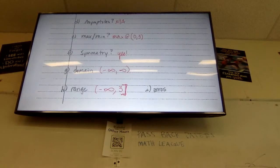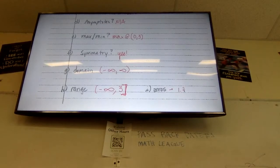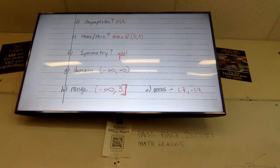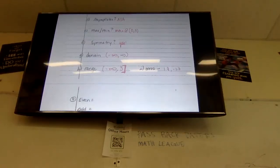For our zeros we can jump to the calculator. The zeros are positive 1.7 and negative 1.7. I feel like finding zeros on the calculator is a skill we've already mastered, so I'm not going to spend class time on that.